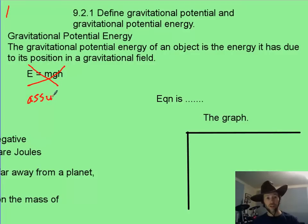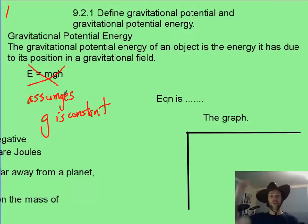because this assumes that the field strength is constant. Which you know, hopefully, as you get higher up, then g gets slightly less. Astronauts in the space station don't have an acceleration of 9.8. It's maybe 9.1 or something. So,